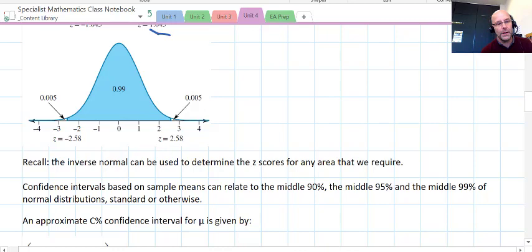Okay, so the inverse normal, we can make use of that to determine Z scores for any area we require. So if it's some other area, we can use that to locate the actual Z scores given the other information like the probability or the proportion there.